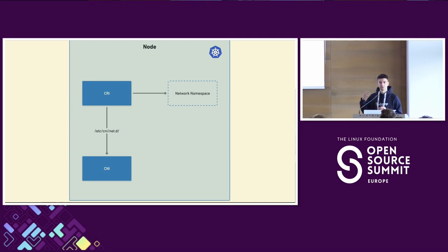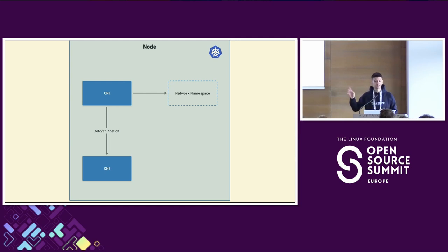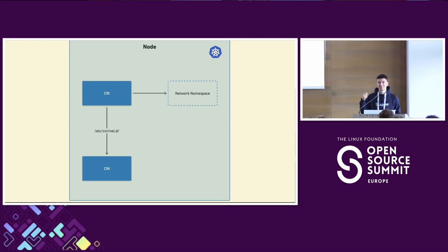The CRI's job is to create containers. A quick summary of what a network namespace is: containers leverage a bunch of existing technologies, one of which is called namespaces. If you've heard the term namespace from Kubernetes, these are not the same — they're coincidentally named the same. The namespaces I'm referring to are Linux namespaces, built into the Linux kernel. When a pod starts, the CRI actually starts two containers — one of them called the sandbox or pause container.